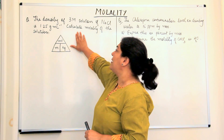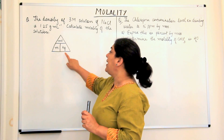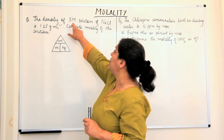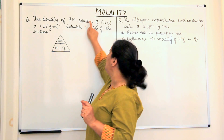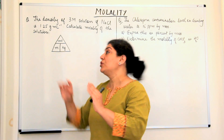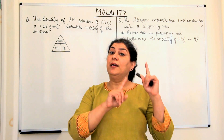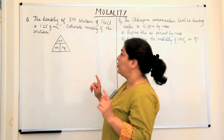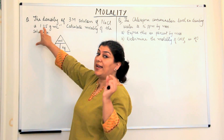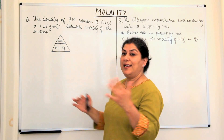In our question, we've been asked to calculate molality, which means we need to find the number of moles of solute and the mass of the solvent in kilograms. We've been given that it's a three molar solution — meaning three moles of sodium chloride are present in one liter of the solution. We're interested in finding the mass of the solvent, and the density of the solution will help us get there.